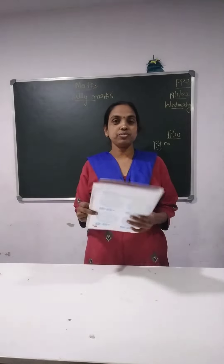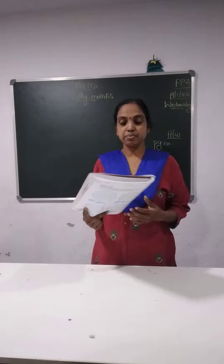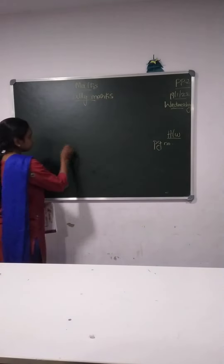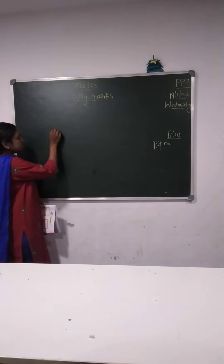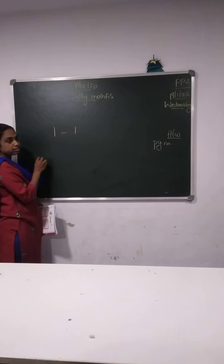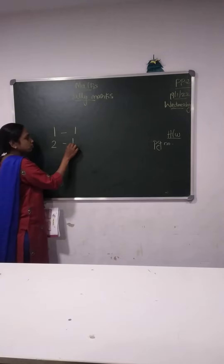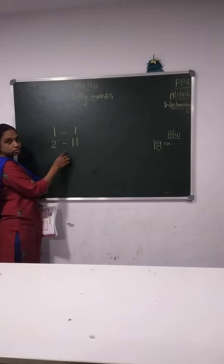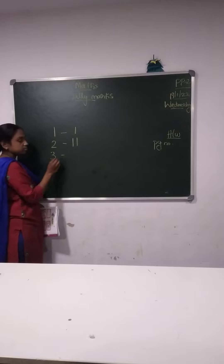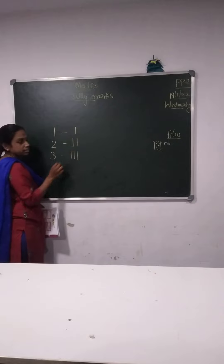By this we are going to finish our math. So tally marks — what is that? See, this is 1, so we will draw here 1 line. Now 2, so we will draw here 1, 2 — 2 lines. 3, we will draw here 1, 2, 3 lines.